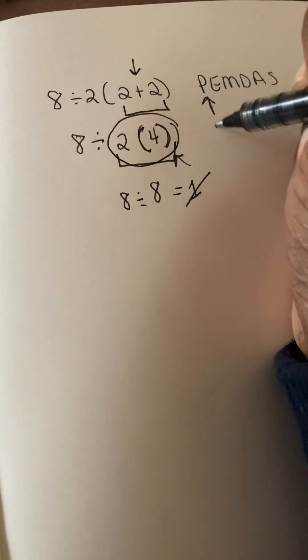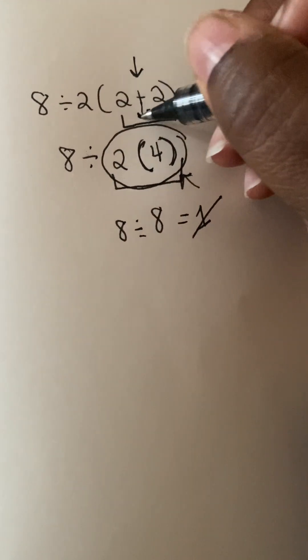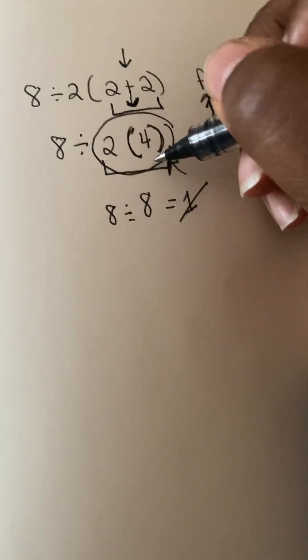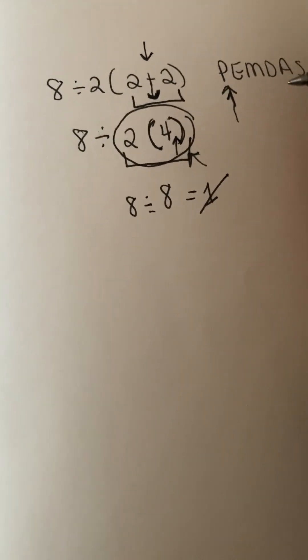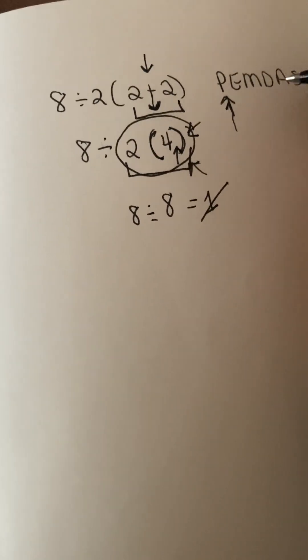So why is this not considered parentheses? Do you remember when I said that it has to be an action included in the parentheses? Because there is no action to be taken in this parentheses, this is no longer considered a parentheses. It's actually considered multiplication.